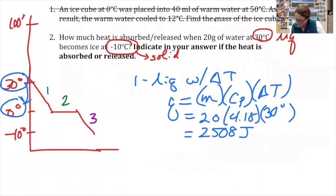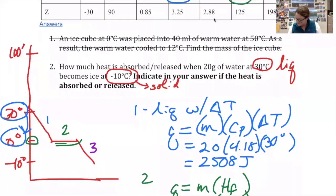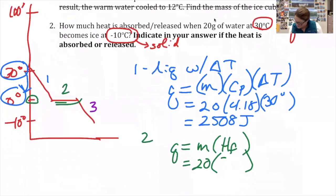Step number two, we have a phase change at the melting point, so I'm going to use q equals mass times the heat of fusion. The mass is still 20 grams. To get the heat of fusion, I'm going to go back up here—for water, the heat of fusion is 334. 20 times 334 gives me 6680 joules.